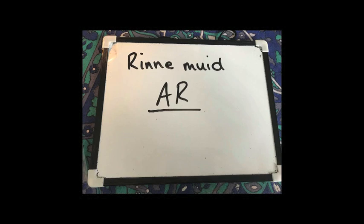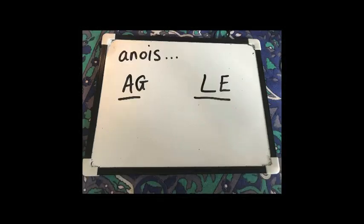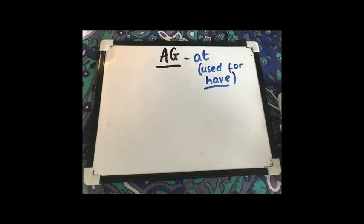So we're going to look again at the Na Forainmneacha Réamhfhoclacha — our prepositions. Last week rinne muid — we did — 'ar'. But an tseachtain seo, this week we're going to move on to 'ag' and 'le'.